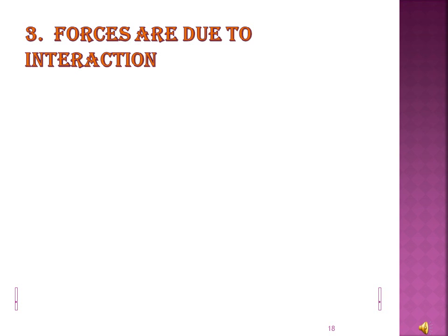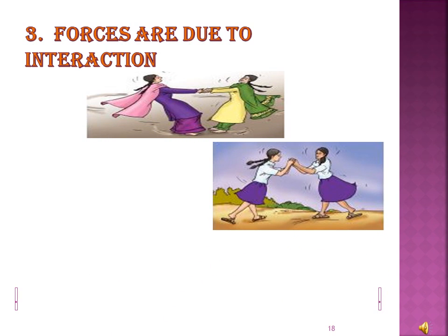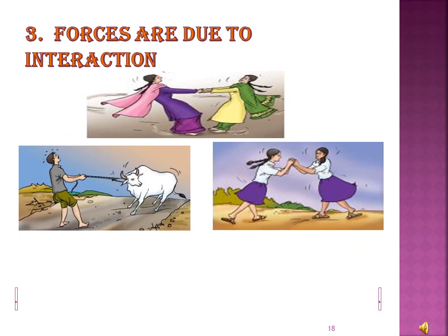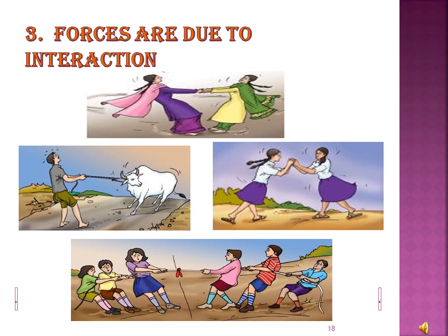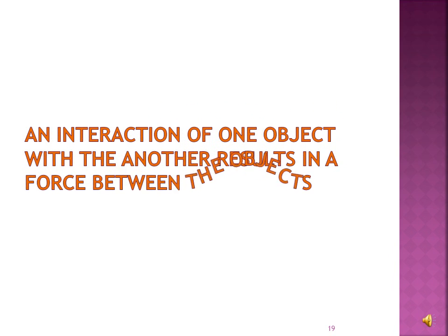Forces are due to interaction. Do you know how force acts? The first picture shows two girls pulling each other. The second shows two girls trying to push each other. The third shows a cow and a man pulling each other. The fourth shows a tug of war where two teams pull each other. In all these situations, at least two objects must interact for a force to come into play.